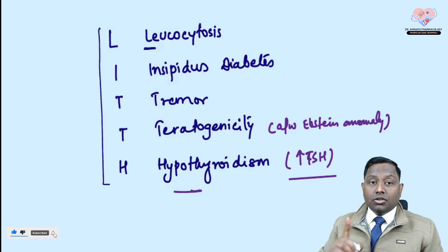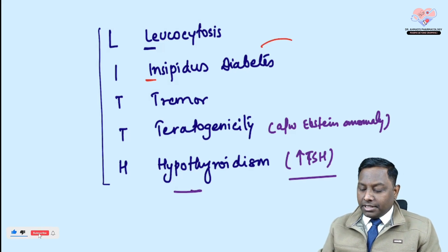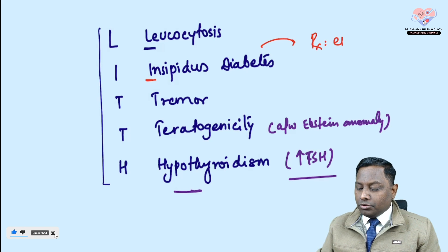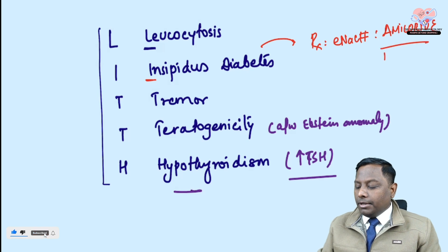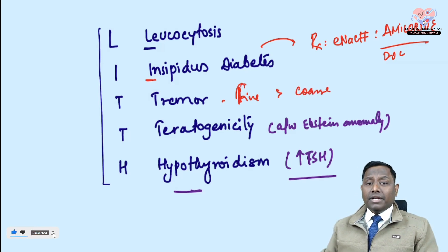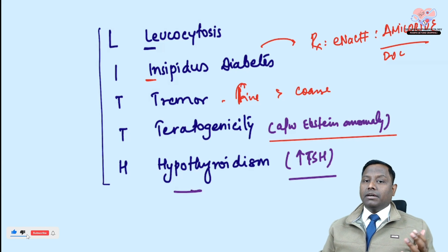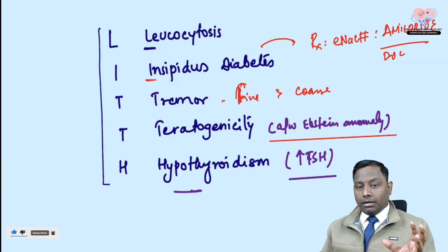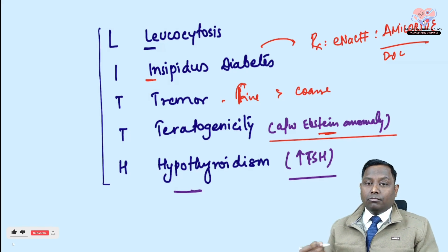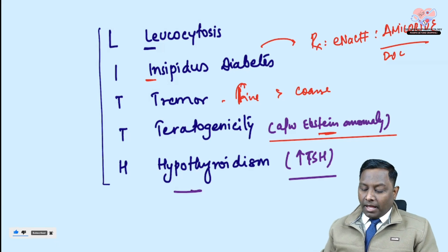L — leukocytosis, not leukopenia. I — insipidus, meaning diabetes insipidus; lithium-induced DI is treated with amiloride, an epithelial sodium channel blocker. T — tremor: initially fine tremor, later coarse tremor. H — hypothyroidism, not hyperthyroidism. I — teratogenicity associated with Ebstein's anomaly — a box-shaped heart on X-ray, already asked in a 2021 question.